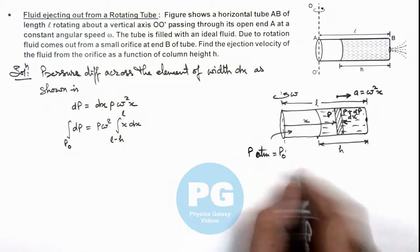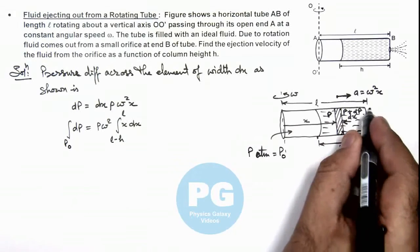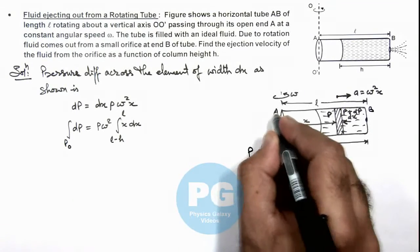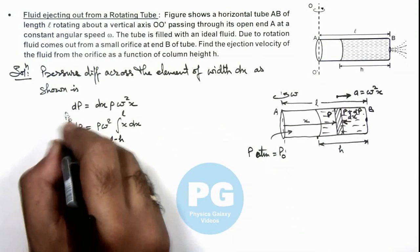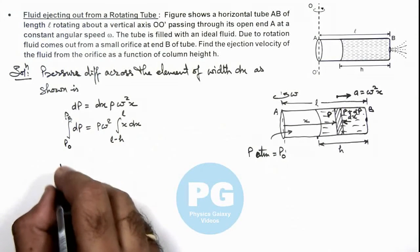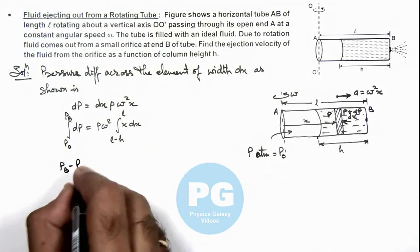Here we can consider P atmosphere to be P_0, and at end B the pressure we can consider as P_B. So this gives us the value of P_B which is P_B minus P_0 is equal to